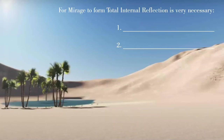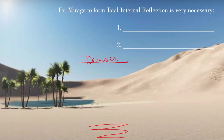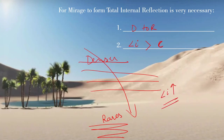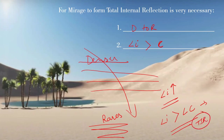For a mirage to form, total internal reflection is necessary, and there are two conditions. Number one: the ray of light should always go from a denser medium to a rarer medium. The air above is cooler — denser medium. The air in contact with the sand is very hot — rarer medium. So the rays are going from denser to rarer. Condition two: the angle of incidence should be greater than the critical angle. As the light ray goes from denser to rarer through different layers, the angle of incidence keeps increasing until it exceeds the critical angle — and total internal reflection, TIR, occurs.